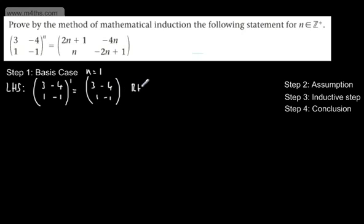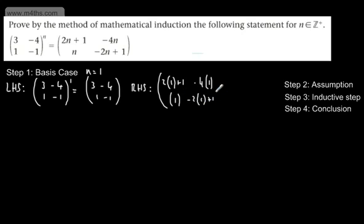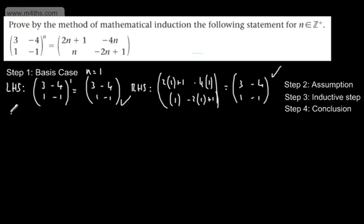Now considering the right-hand side, we sub in n=1: we get (2×1+1, -4×1; 1, -2×1+1), which gives us (3, -4; 1, -1). These two sides are equal, so we can state: shown true for n equals 1.